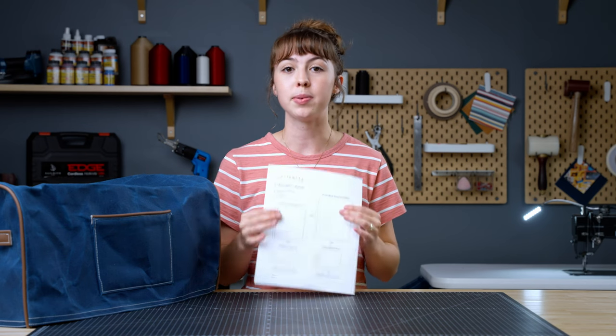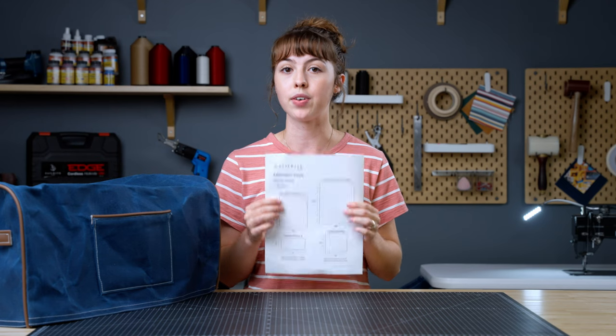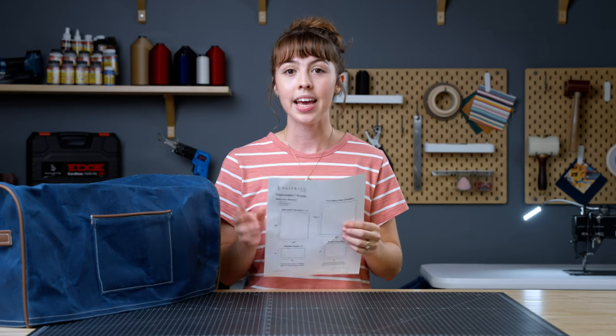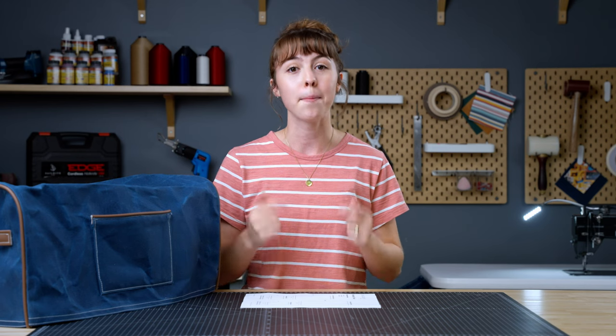We're going to be making our cover specifically for our Fabricator sewing machine, but in the description below you can find two PDFs. One of them is going to be specifically for the Fabricator cover, so it'll have all the dimensions that you need for that. The second PDF is going to be a template for any sewing machine. It's going to have all the equations that you can figure out the dimensions for your specific machine. So whether you're making one for the Fabricator or another machine, make sure to check those PDFs out in the description below.